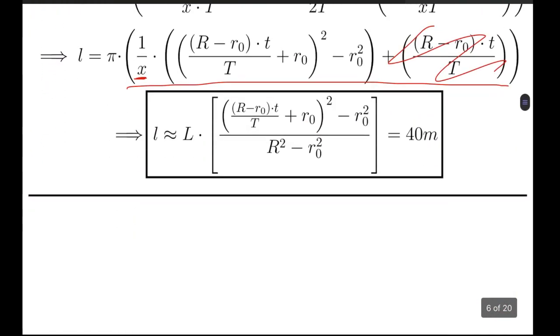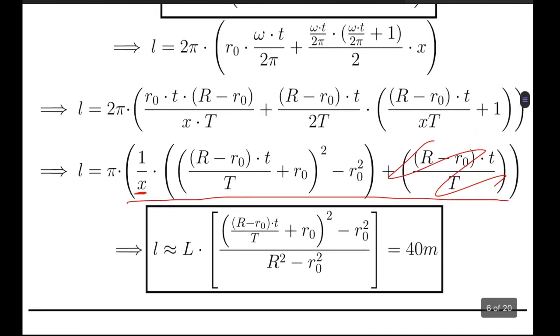Finally, we get this answer to be: small l equals capital L times [(R·t/T + r0)² - r0²] / (R² - r0²). On substituting all the values, you can get the final answer yourself, which is 40 meters.